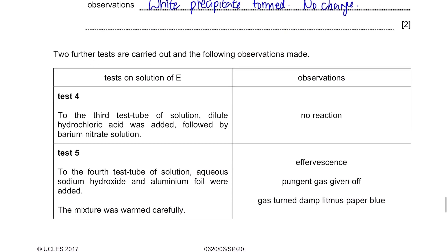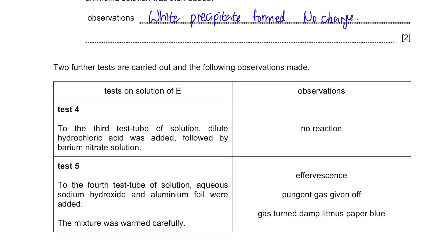Okay, then two further tests were carried out. In test 4, dilute hydrochloric acid was added followed by barium nitrate solution. There was no reaction. In test 5, aqueous sodium hydroxide and aluminum foil were added and was warmed. There was effervescence, pungent gas given off and gas turned damp litmus paper blue.